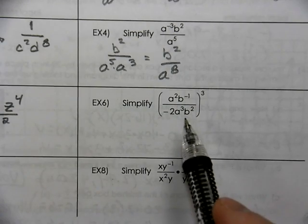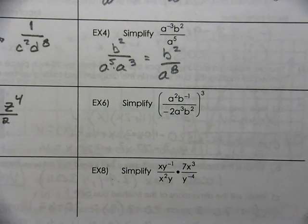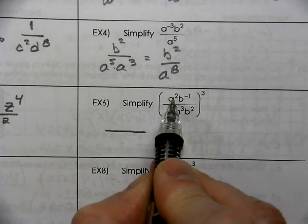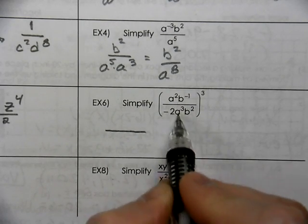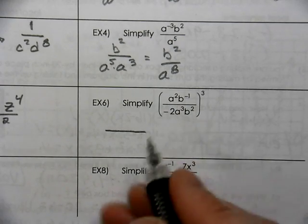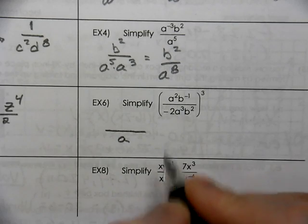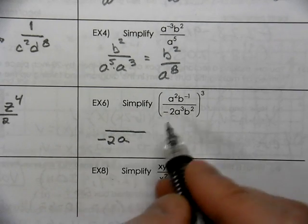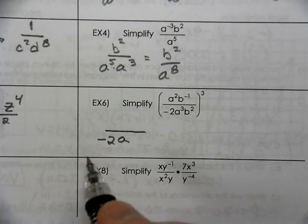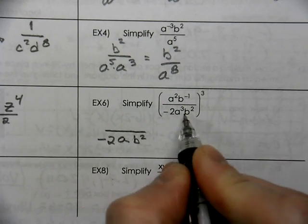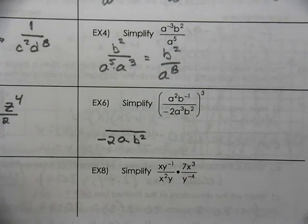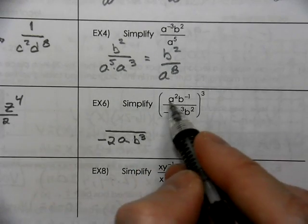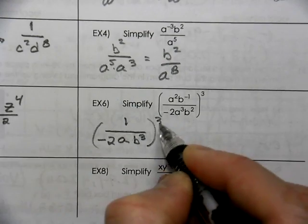Here there are a couple of different ways to do this. If you want to clean up the inside first and then work with the exponent, you could do that. Notice you have 2 a's on top and 3 a's on bottom — the 3 is 1 bigger, so you have an a left on the bottom. The negative 2 on the bottom has a positive exponent, so it stays where it is. You have b squared and b to the negative 1, which goes to the bottom to make b to the third. Everything moves away, so there's just a 1 on top, all to the third power.